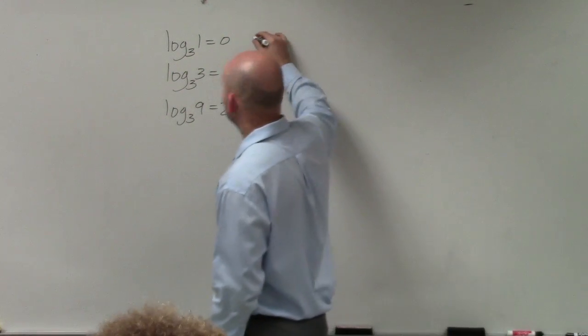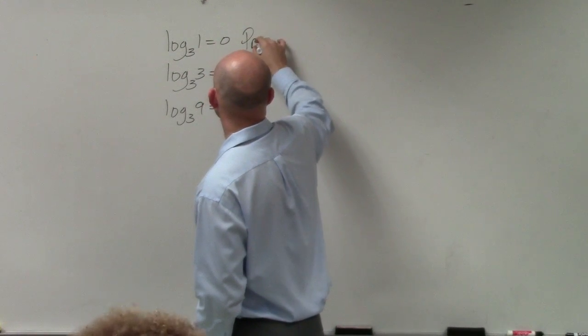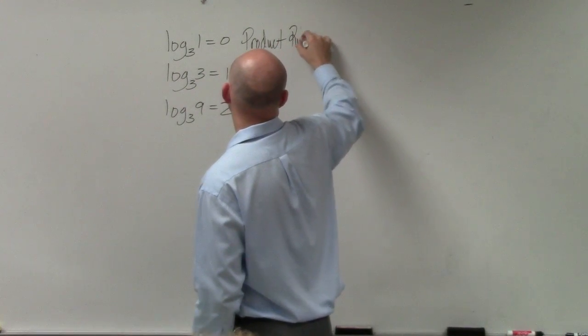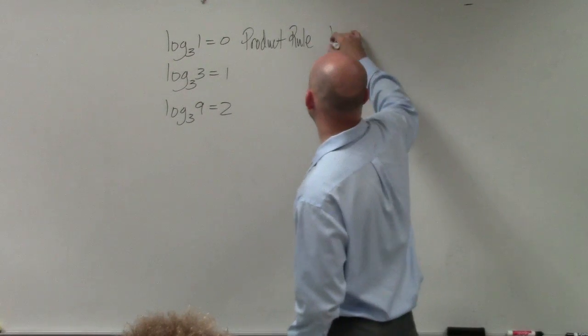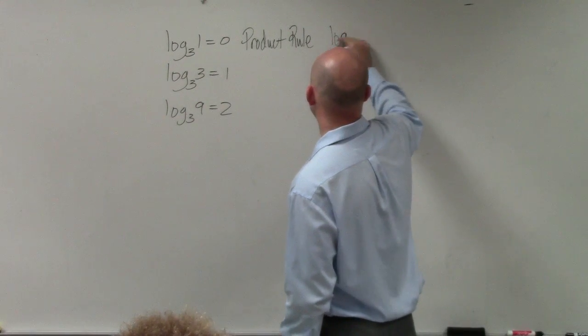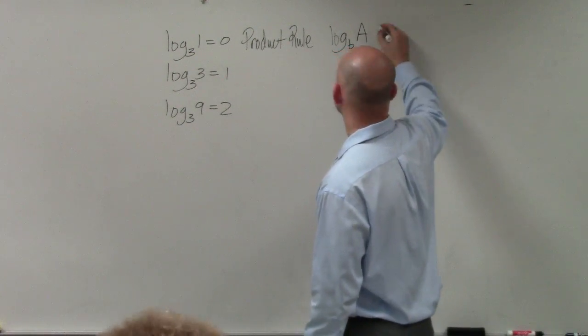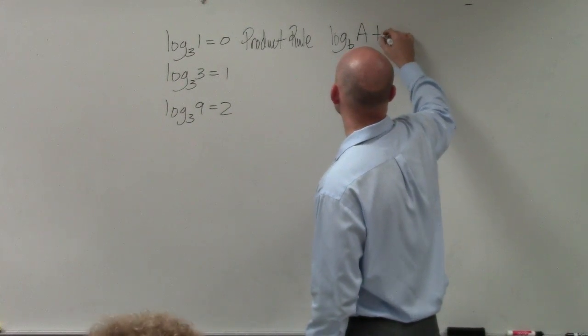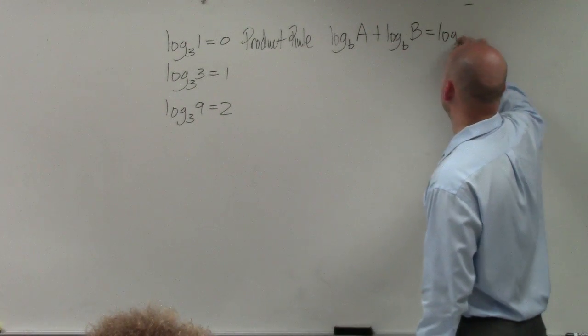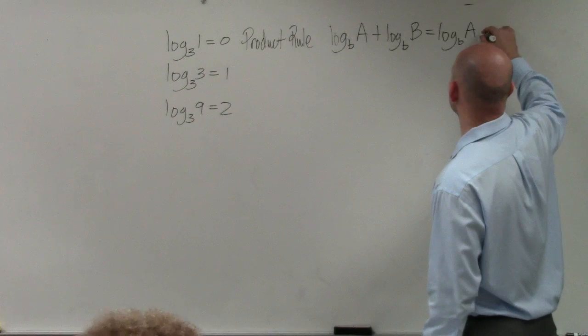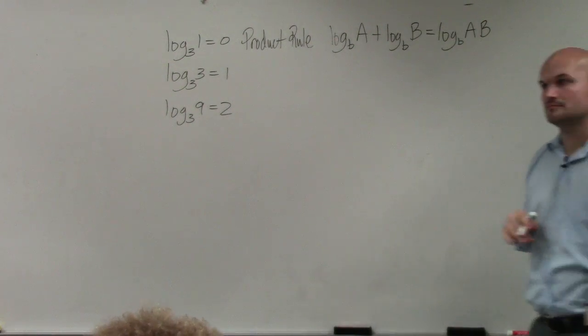So there's a couple rules that we were taught in algebra 2, but we're going to go back over them. The first rule is the product rule. Basically, the product rule states that if you have a logarithm for any base, that means it could even be a natural logarithm, of a value plus the logarithm of the same base of B, well, then that's equal to one single logarithm of that same base of the product of A and B.